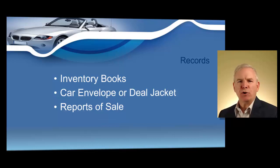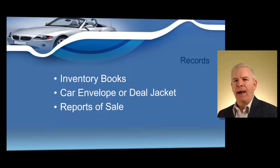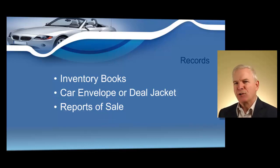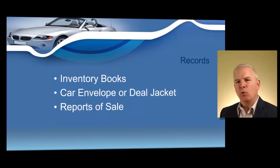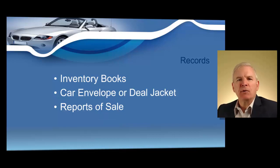Under the sales and use tax law, you are required to keep adequate records showing your gross receipts from sales or leases of vehicles — whether you regard the receipts as taxable or non-taxable — all deductions allowed by law and claimed on your sales and use tax returns, and the total purchase price of all tangible personal property purchased for sale, consumption, or lease, such as vehicle purchase invoices or auction receipts. These records must include your normal books of accounts, all bills, receipts, invoices, repair orders, contracts, or other documents of original entry that support the entries in your books of record. All schedules and working papers used in preparation of your tax returns must also be kept.